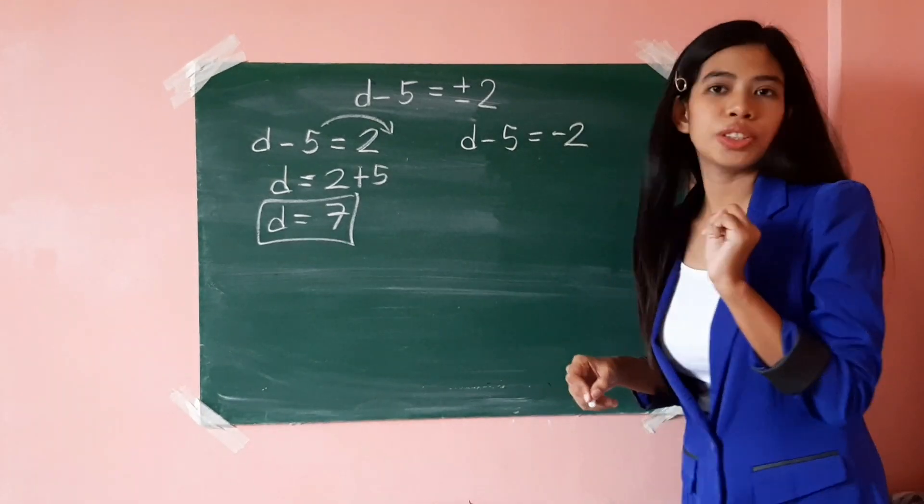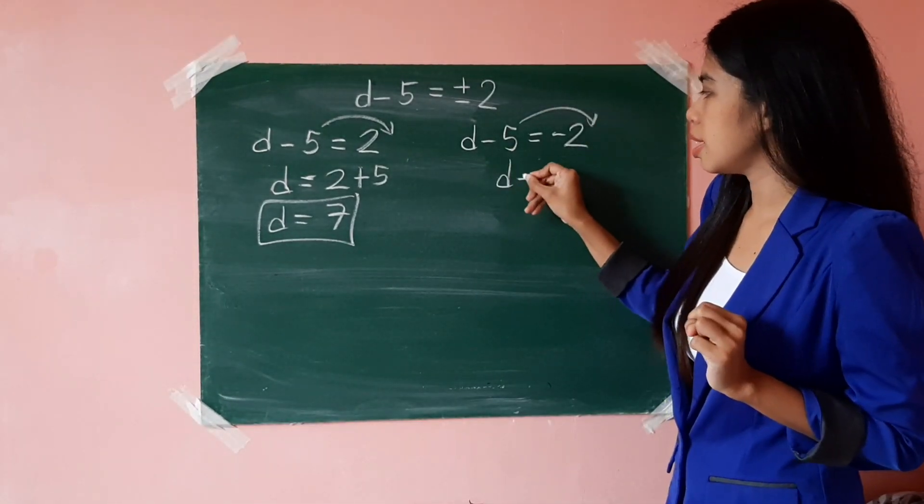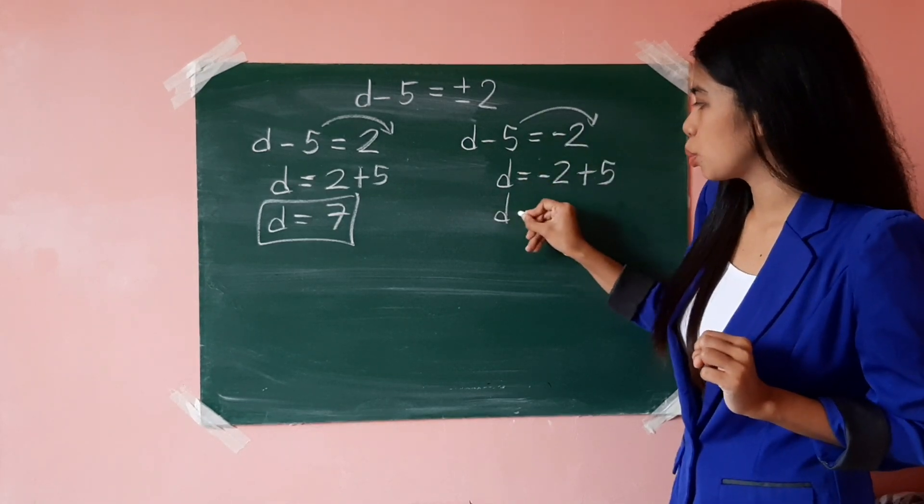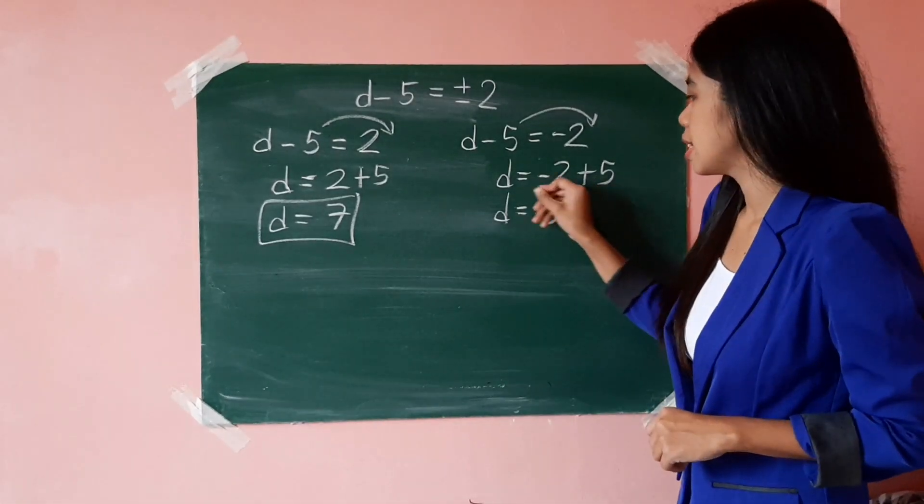And for the second value of d, once again, you do the same thing. d equals negative 2 plus 5. That would be negative 2 plus 5 is positive 3.